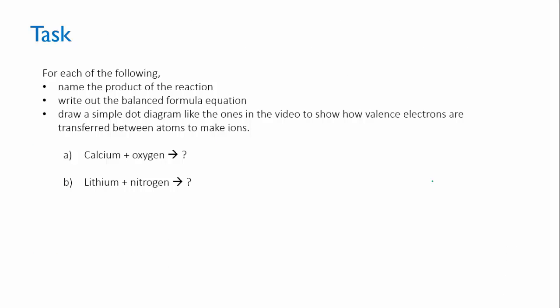In this task, I'd like you to have a look at these two reactions, and I want you to figure out what salt would be produced when these two elements react. So name the product of the reaction. Then write out the balanced formula equation for that reaction. And then finally, like we did earlier in the video, draw some simple dot diagrams that show how the valence electrons are transferred between one reactant and the other to make the ions of the final product.